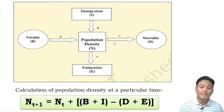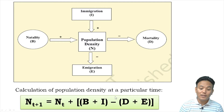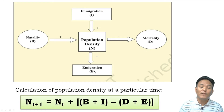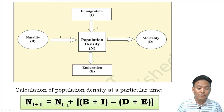To calculate population density at a particular time, we use the formula: N(t+1) = N(t) + B + I − D − E, where B is natality, I is immigration, D is mortality, and E is emigration. Population density will increase if the number of births plus immigration is more than deaths plus emigration, and will decrease if the reverse is true. You have to remember this diagram along with its interpretation, and the formula is also important.